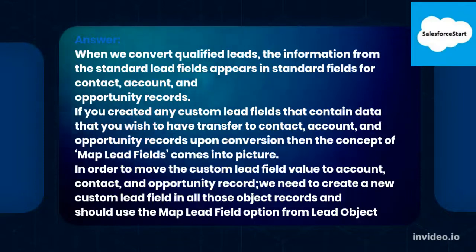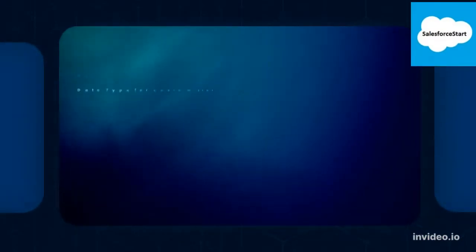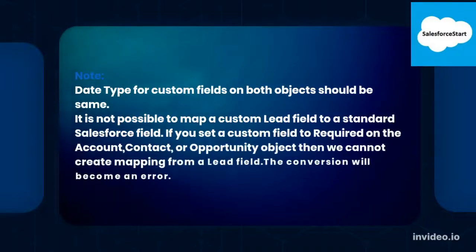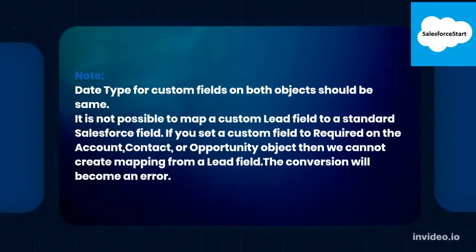In order to move the custom lead field value to Account, Contact, and Opportunity records, we need to create a new custom field in all those objects and use the Map Lead Field option from the Lead object. Note: the data type for custom fields on both objects should be the same. It is not possible to map a custom lead field to a standard Salesforce field. If you set a custom field to required on the Account, Contact, or Opportunity object, we cannot create mapping from a lead field — the conversion will return an error.